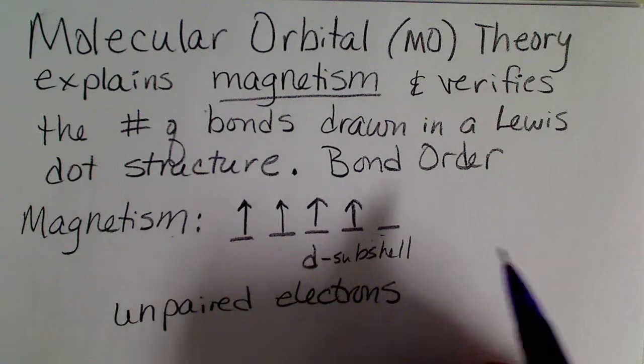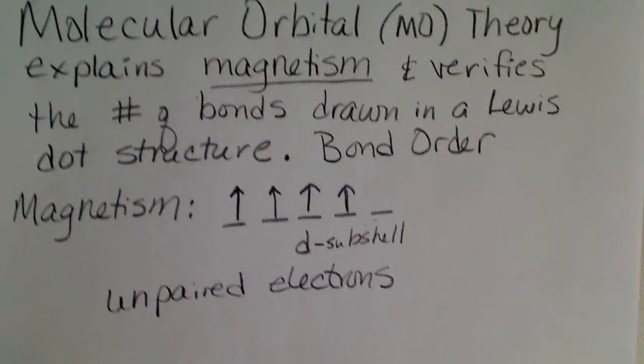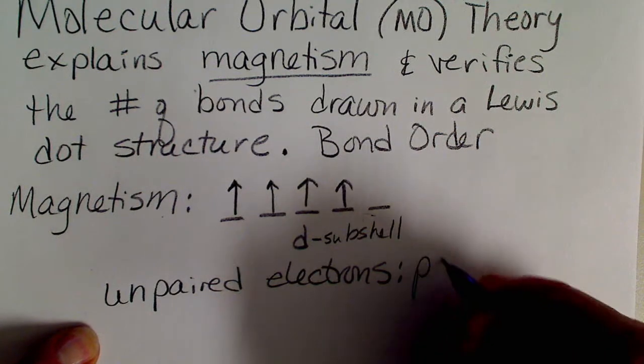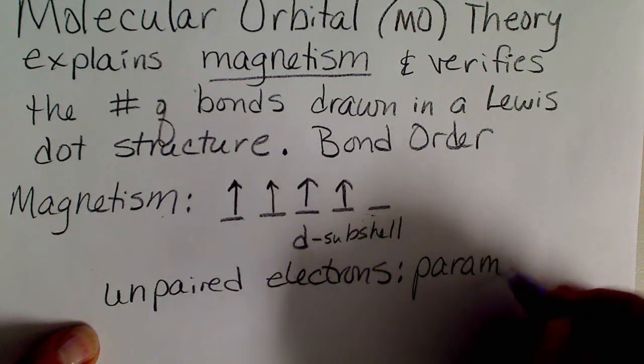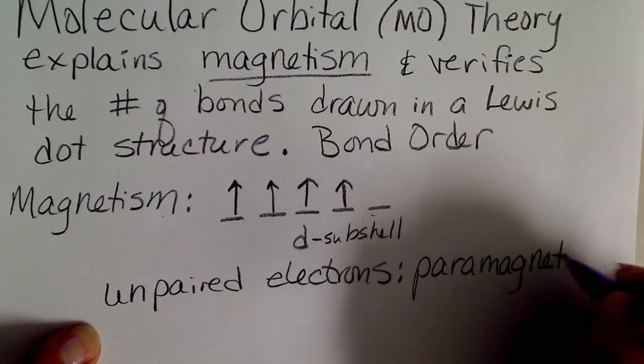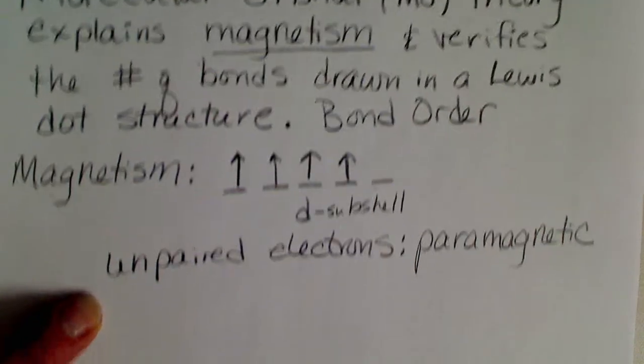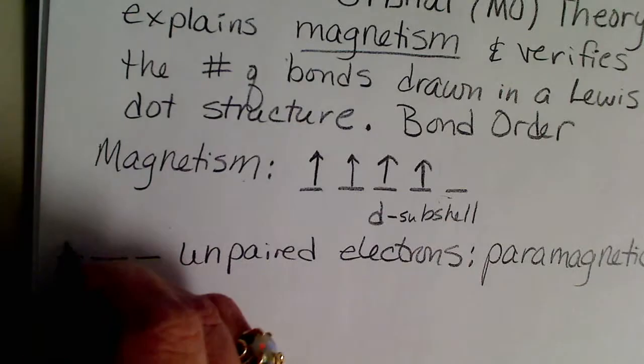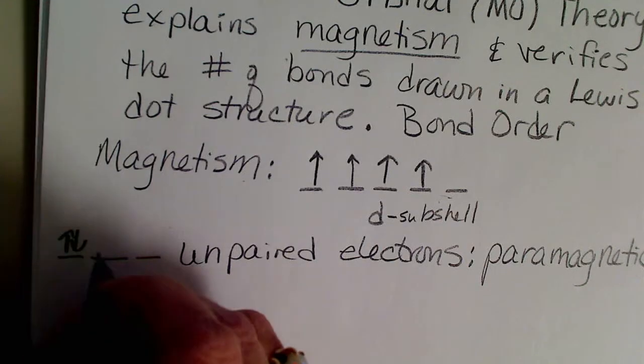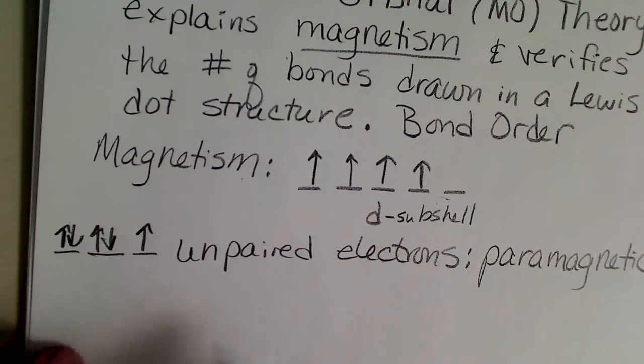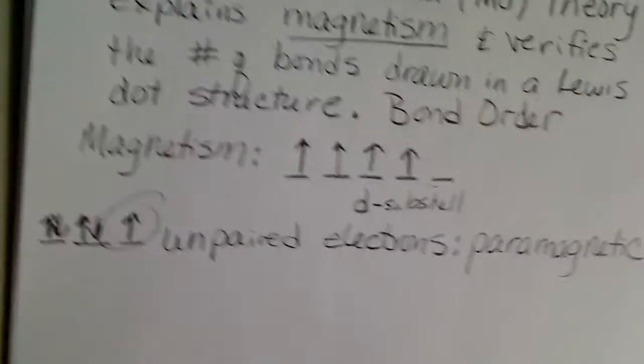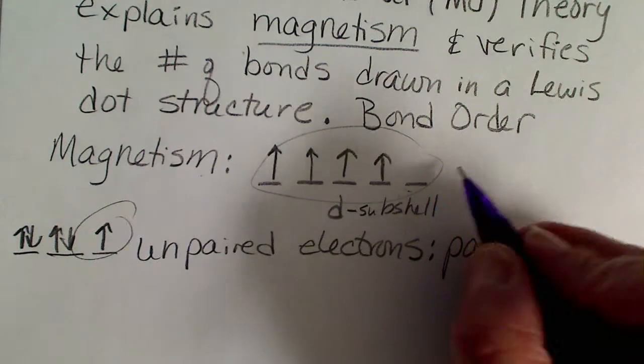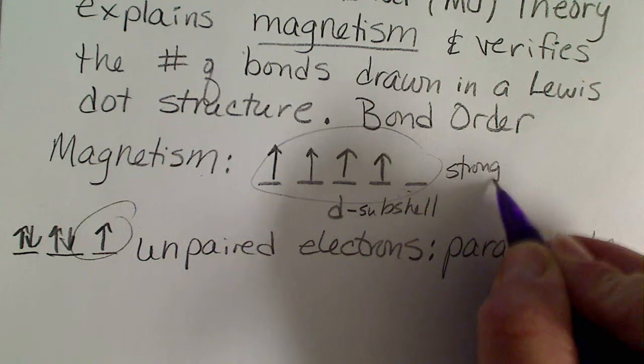The more unpaired electrons, the stronger the attraction will be. But unpaired electrons we're going to refer to as paramagnetic. Even if we just had one unpaired electron, that would be paramagnetic. If we had four or five unpaired electrons, that would also be paramagnetic. This would just be a stronger attraction.